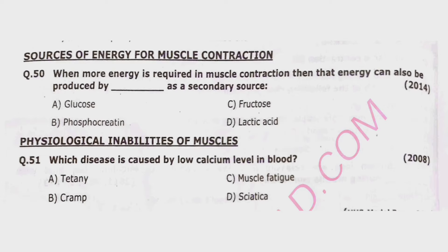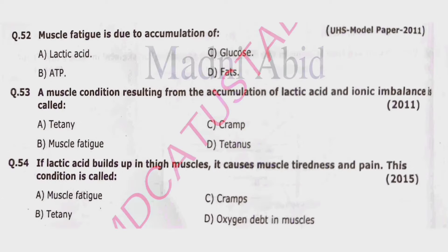Question 51: Which disease is caused by low calcium level in blood? Options: tetany, cramps, muscle fatigue, or sciatica. Correct option is alpha — tetany. Question 52: Muscle fatigue is due to accumulation of lactic acid, ATP, glucose, or fats. Correct option is alpha — lactic acid. Question 53: A muscle condition resulting from the accumulation of lactic acid and ionic imbalance is called tetany, muscle fatigue, cramps, or tetanus. Correct option is beta — muscle fatigue.